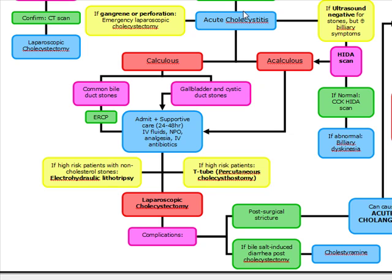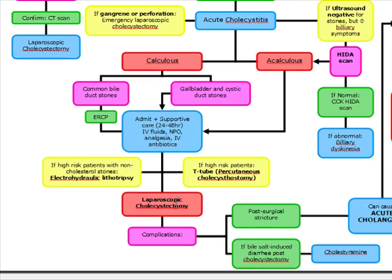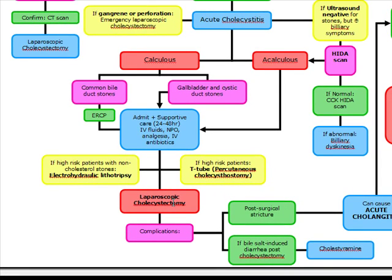Remember, if there's acute cholecystitis and we see gangrene or perforation — characterized by emphysematous cholecystitis or generalized peritonitis — anytime you see peritonitis, you have to do an emergent laparoscopic cholecystectomy. But if not, we're just going to admit them, do supportive care, stabilize them, and wait about 6 to 12 weeks before we do the laparoscopic cholecystectomy.